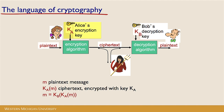Alice will use her encryption key, K sub A, and run that through an encryption algorithm. Out of the other end of that encryption algorithm we'll get something called ciphertext. Ciphertext is the encrypted version of the plain text. Whereas if I got a hold of the plain text I could just read it, if I get the ciphertext it's just going to look like gibberish — this is the version that someone who's not supposed to see this stuff isn't going to be able to read.